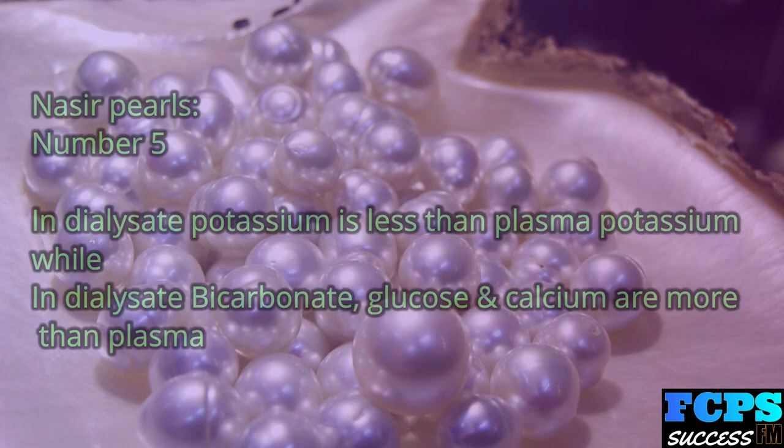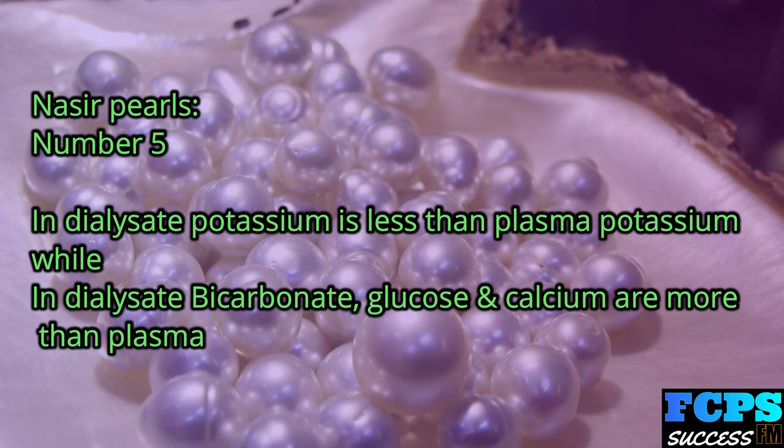Nasir Pearl number 5: In dialysate, potassium is less than plasma potassium, while dialysate bicarbonate, glucose, and calcium are greater than plasma levels.